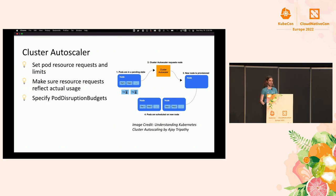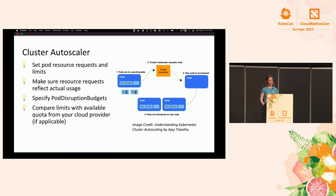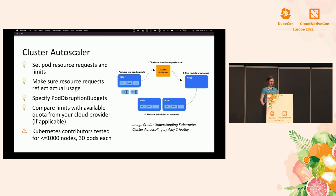You also want to specify pod disruption budgets — this is really important for the cluster autoscaler. When it adds or removes nodes, it reschedules pods, and if you have a high-availability system, the pod disruption budget ensures workloads are transitioned safely. You also need to make sure you don't try to scale beyond the limit your cloud provider allows — saying you can go to 100 nodes when your cloud provider caps you at 10 can definitely cause an incident. The Kubernetes contributors have tested the cluster autoscaler up to 1,000 nodes with 30 pods per node, so keep that in mind for mega workloads.